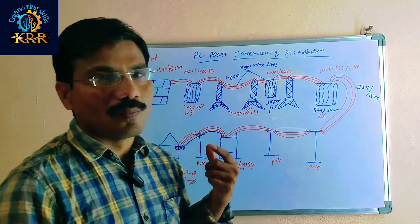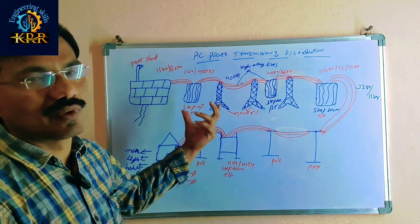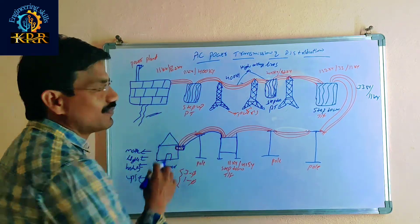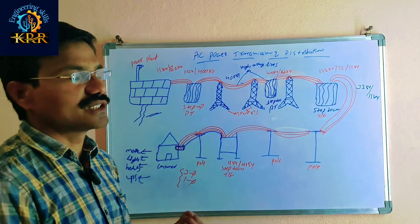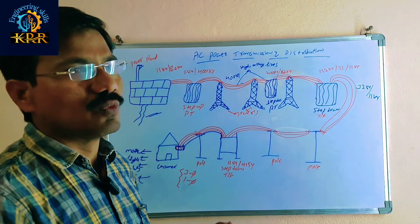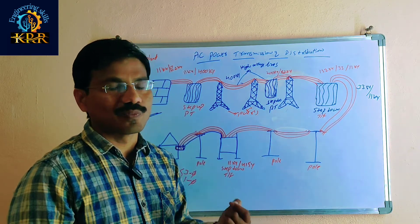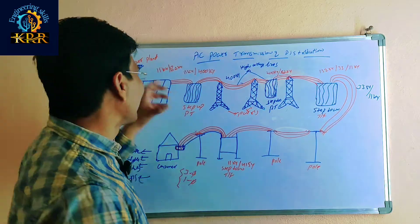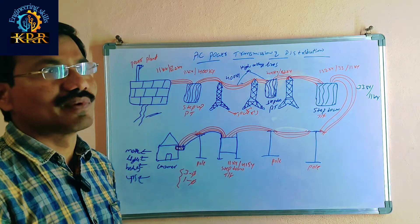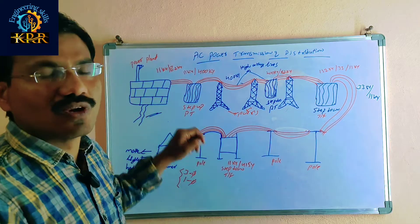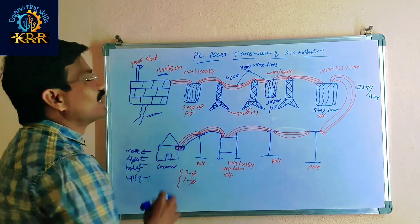Now discussing the full power transmission and distribution system. Starting from generation: in the power plant, power is generated from conventional sources — hydro, steam/oil, gas, and nuclear power plants — and from non-conventional sources such as solar, wind, geothermal, and biomass. Using these energy sources, power is generated.